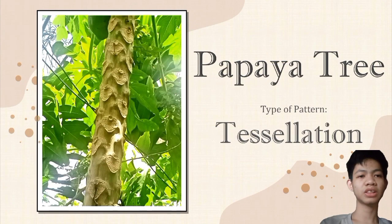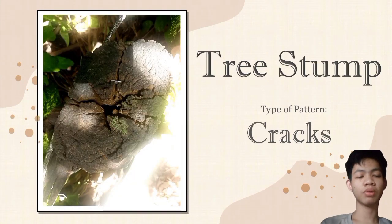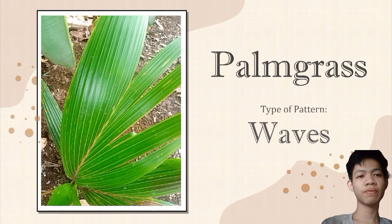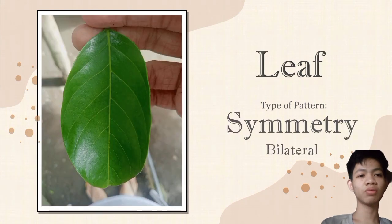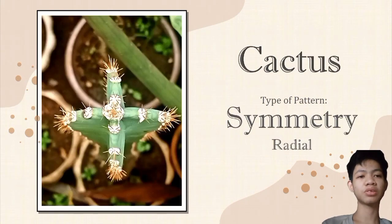The first image has tessellation patterns. The second one has cracks. This leaf right here has the weave pattern. The fourth one has bilateral symmetry, and the last one has radial symmetry.